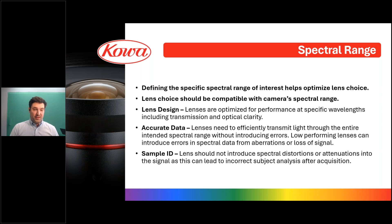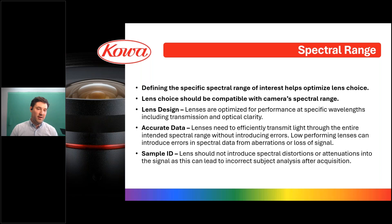Lenses need to efficiently transmit light through the entire spectrum you intend to capture without introducing errors or other issues. Low-performing lenses can sometimes introduce errors in the spectral data that will make analysis more difficult later. These can come from loss of signal or from aberrations. If lenses introduce spectral distortions or attenuations, the signal can be affected, and you could potentially have an incorrect subject analysis after the acquisition.